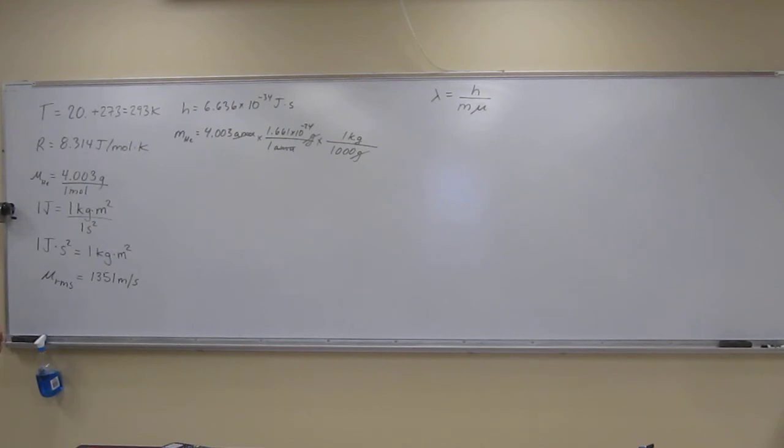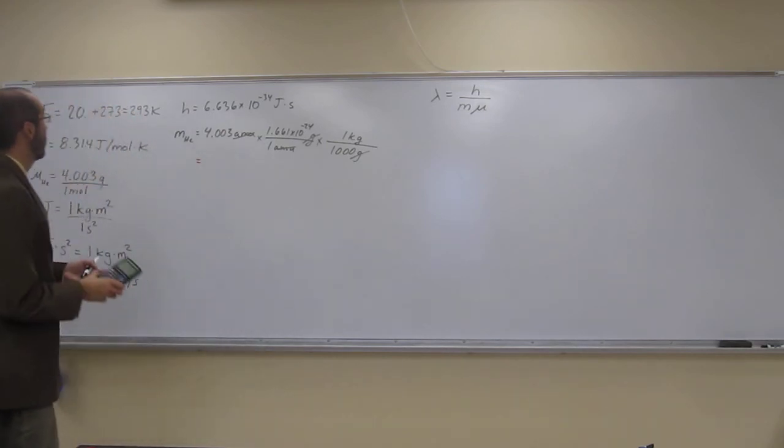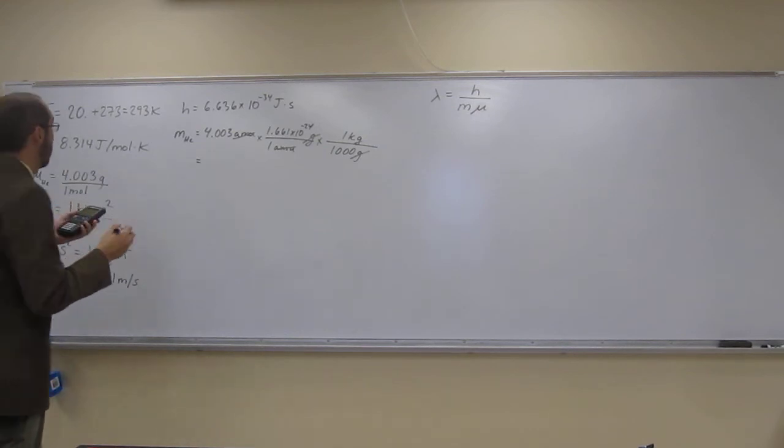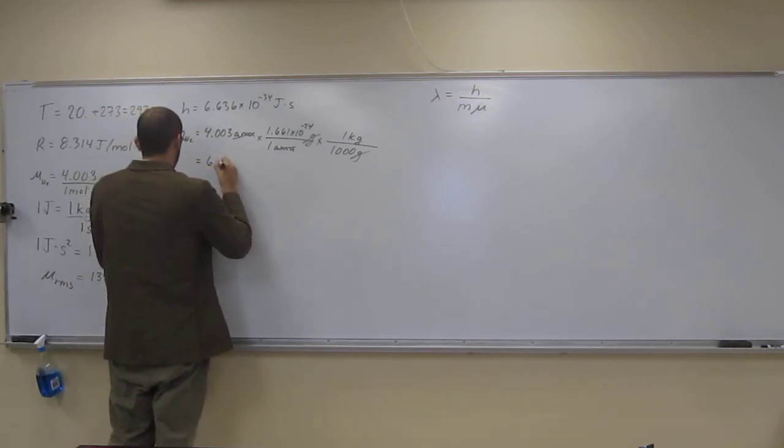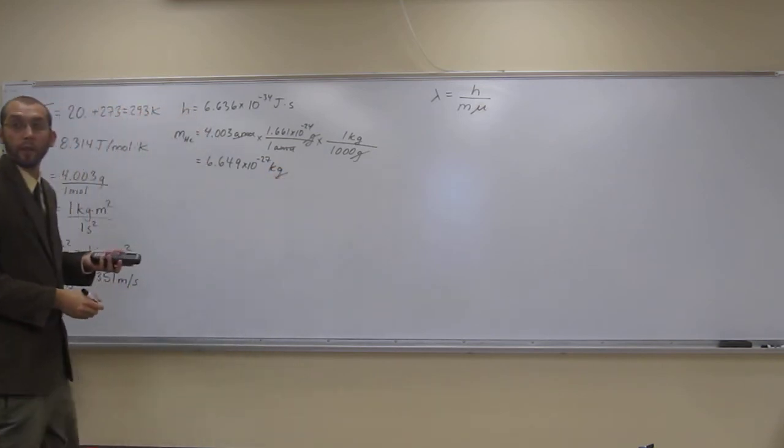So, let's see. Let's start just plugging stuff in, and if we need to use anything else to convert, we'll do. So, let's figure out what this number is first. 4.003... So, 6.649 times 10 to the negative 27 kilograms, like that.